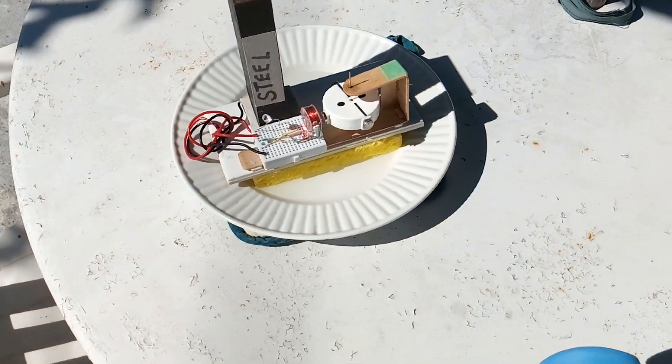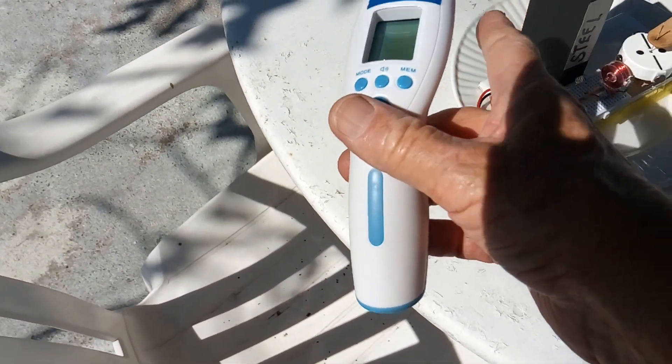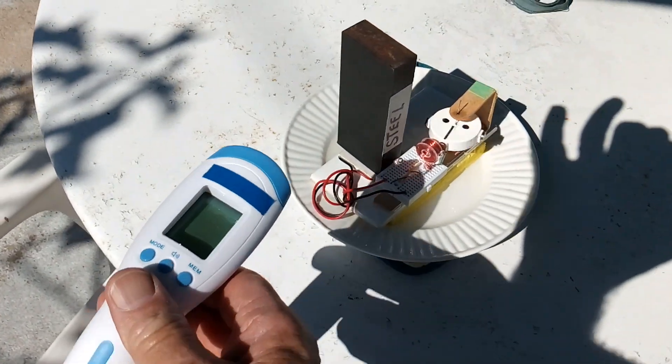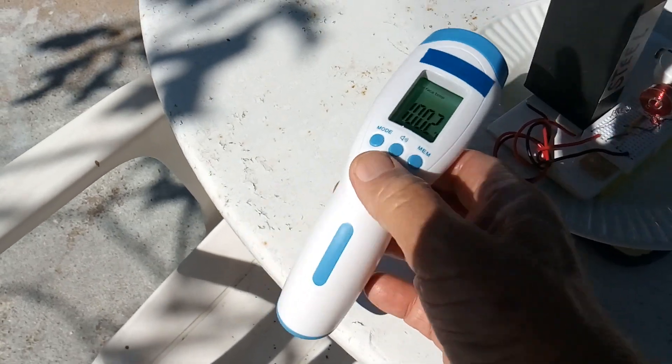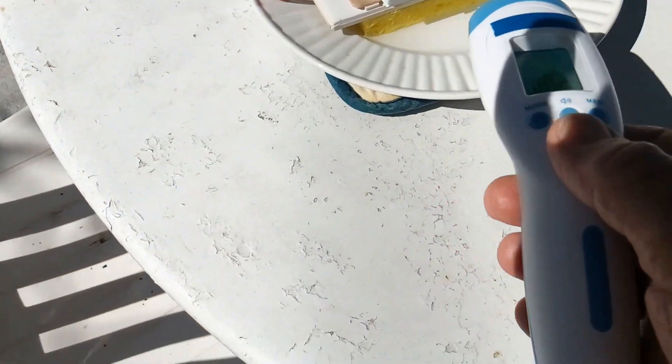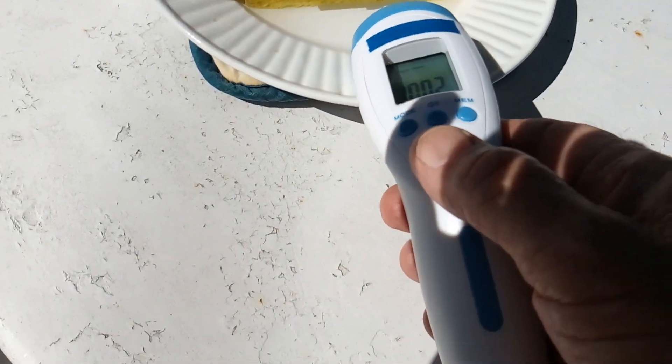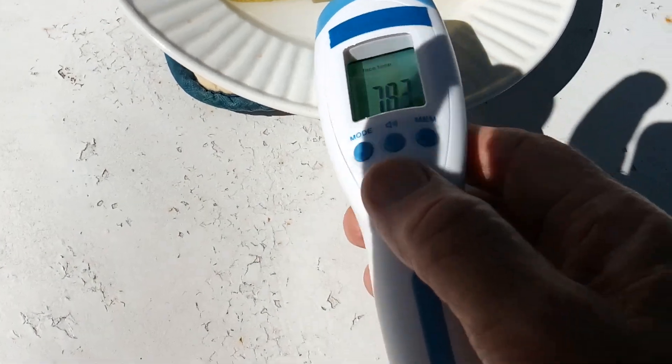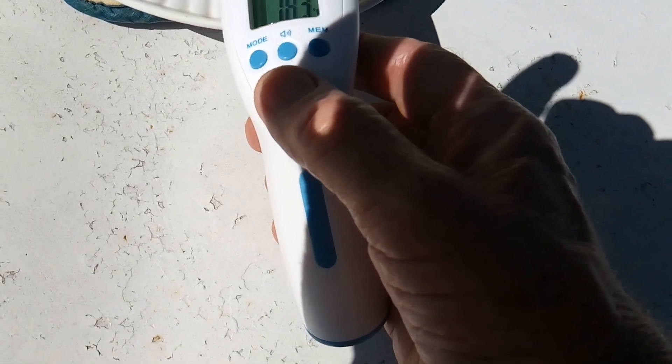And let me show you the temperatures here. This is a block of steel painted black facing the sun and that's at 100 degrees. The surface here looks like 78.